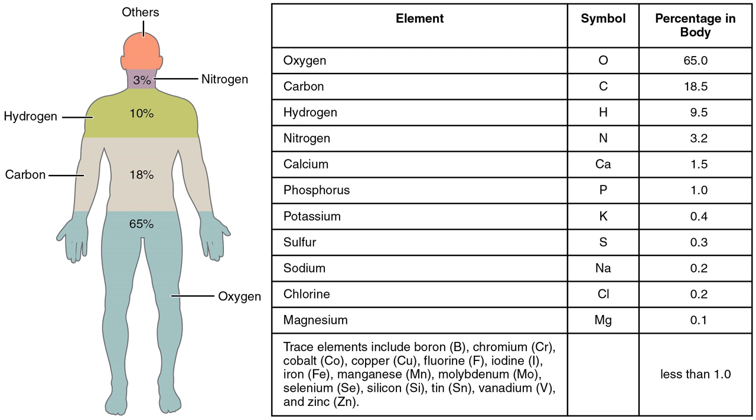Body composition may be analyzed in terms of molecular type, such as water, protein, connective tissue, fats, hydroxylapatite, carbohydrates like glycogen and glucose, and DNA. In terms of tissue type, the body may be analyzed into water, fat, muscle, bone, etc.